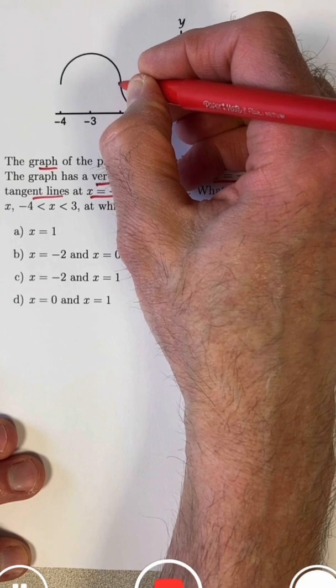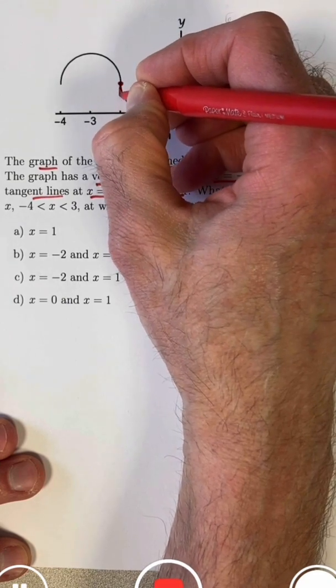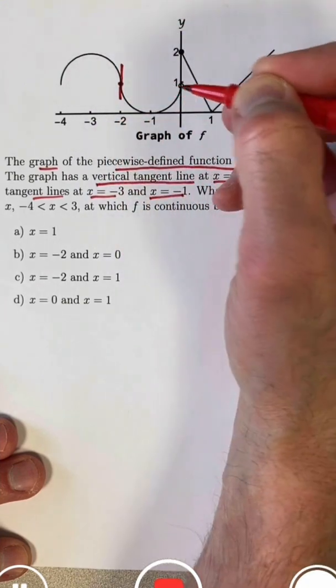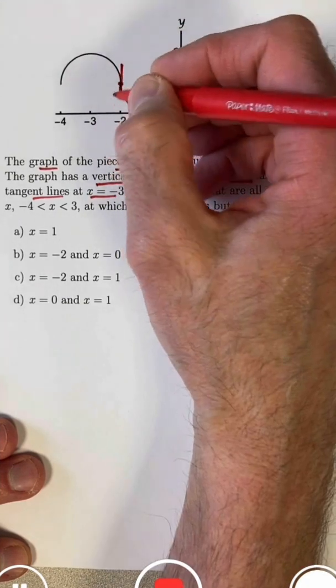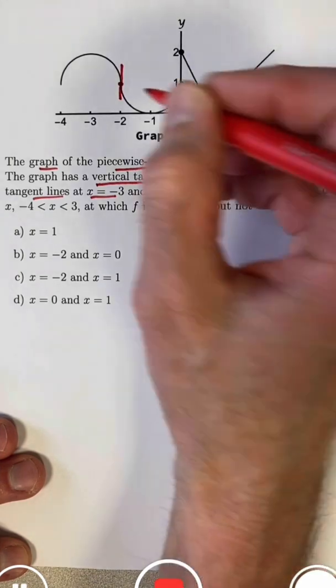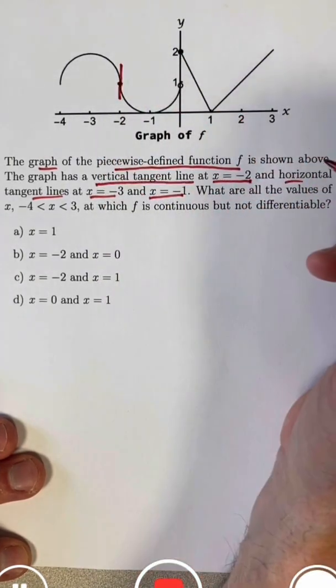So right here, at negative 2, there is a vertical tangent line. That does not contradict the vertical line test. Every vertical line passes through this graph at most once, in spite of the fact that there's a vertical tangent line there.